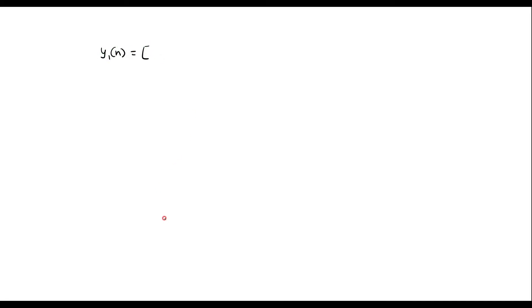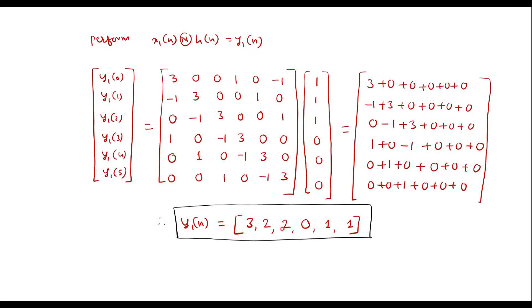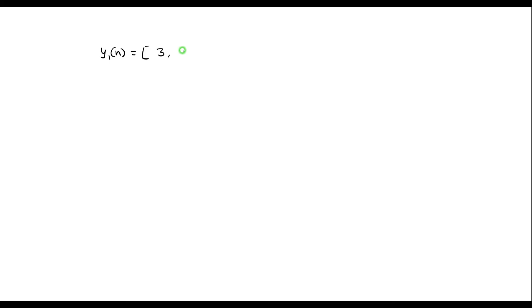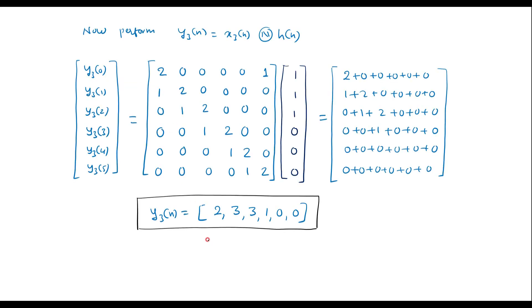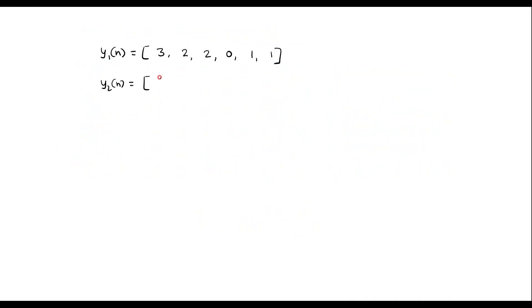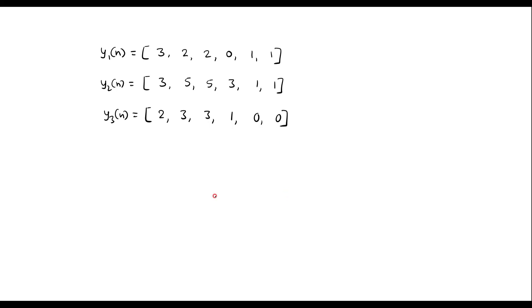Writing all output sequences: y1[n] equals {3, 2, 2, 0, 1, 1}, y2[n] equals {3, 5, 5, 3, 1, 1}, and y3[n] equals {2, 3, 3, 1, 0, 0}.